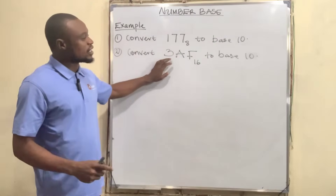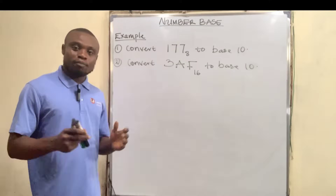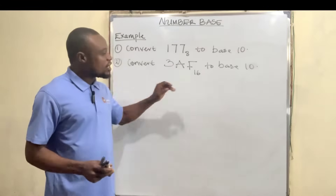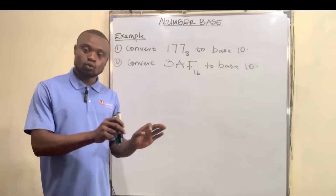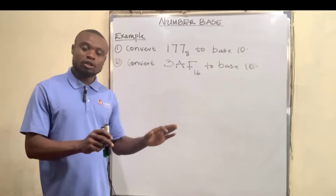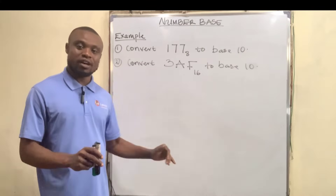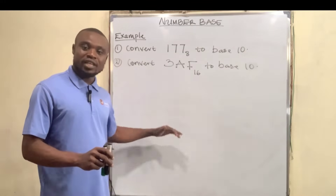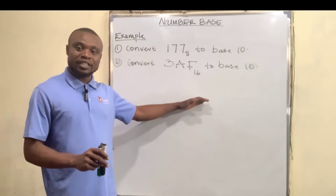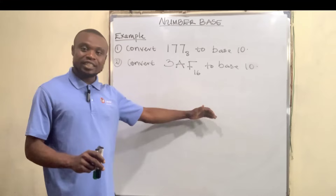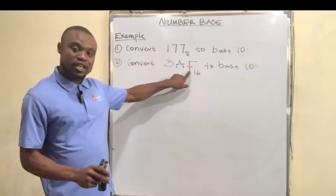The second question is to convert 3AF base 16 to base 10. Basically, binary numbers particularly start from base 2, we have base 2 down to base 9. From 10 and above they are represented with alphabets, so we have 10 as A, 11 as B, 12 as C, 13 as D, 14 as E, and 15 as F. So basically A here is 10 and F here is 15.